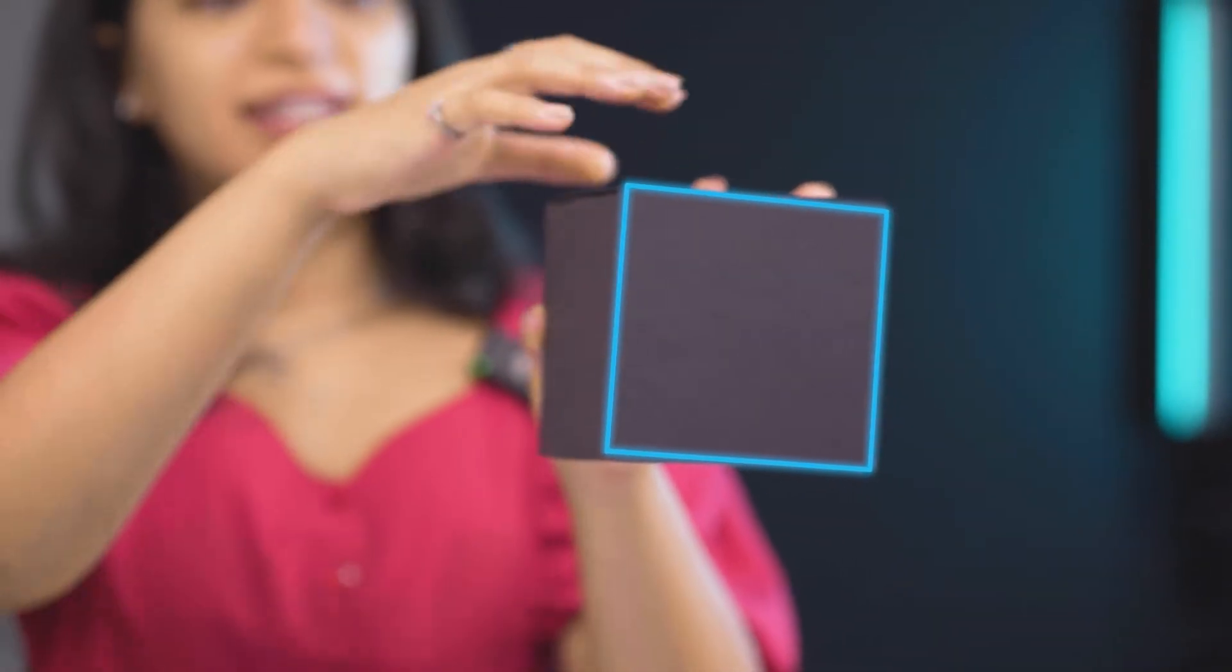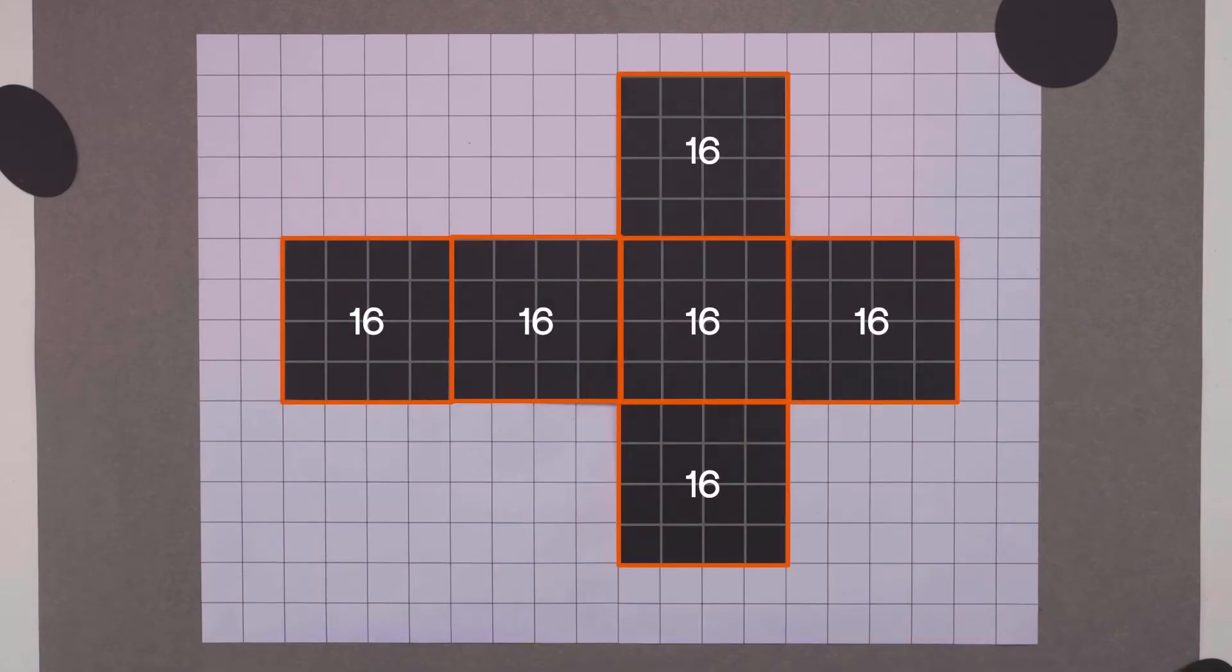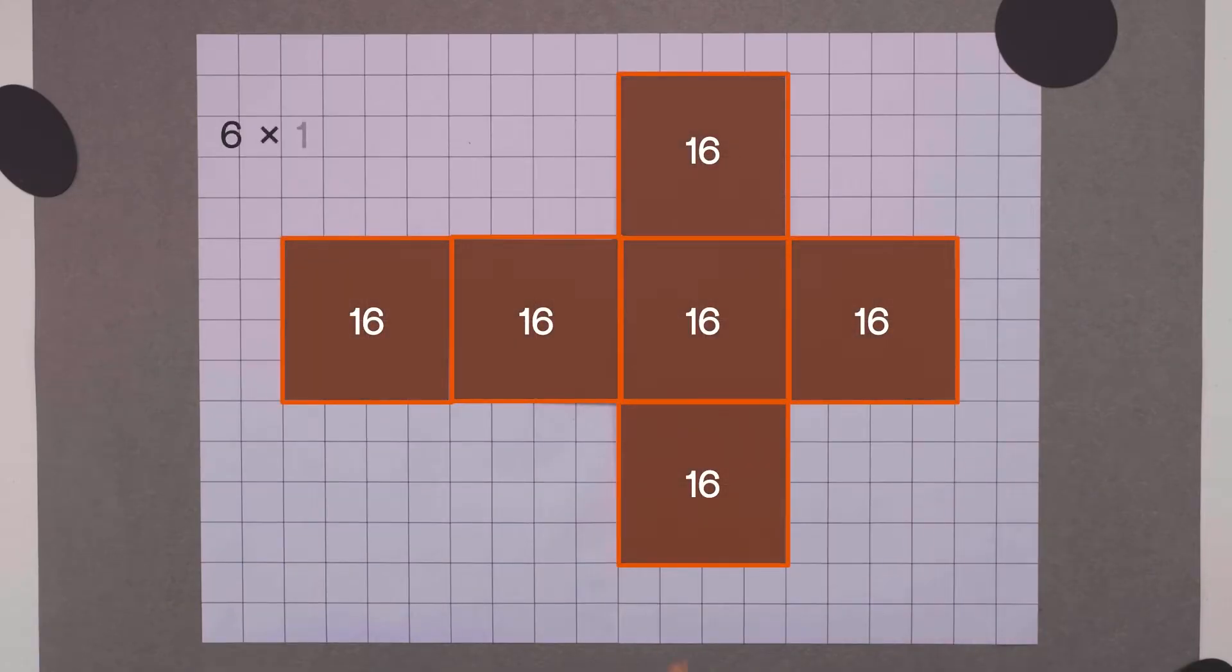Like each face of this cube is a square, the area of this square is 4 times 4, that's 16 square units and this cube is made up of 6 such squares. So its surface area is 6 times 16 or 96 square units.